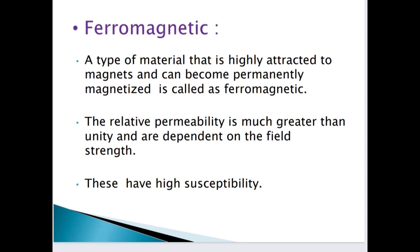Ferromagnetic material is a type of material that is highly attracted to magnets. Its relative permeability is much greater than unity, meaning greater than one, and it depends on field strength. These have high susceptibility — the susceptibility is very high for ferromagnetic materials.